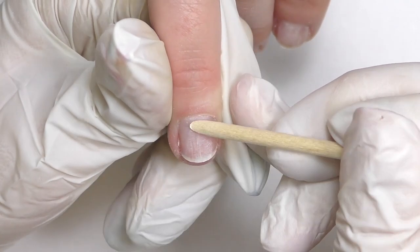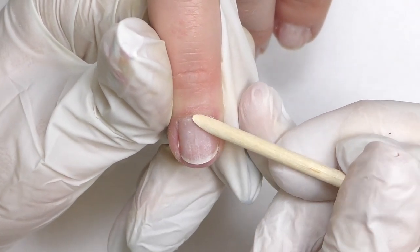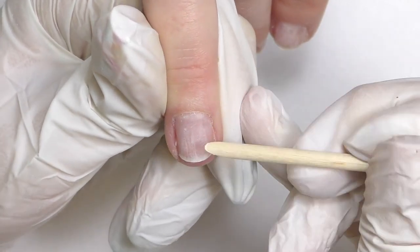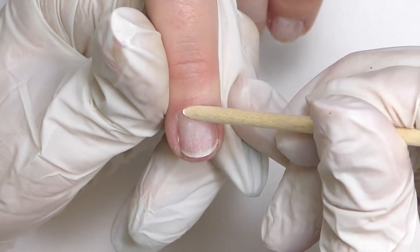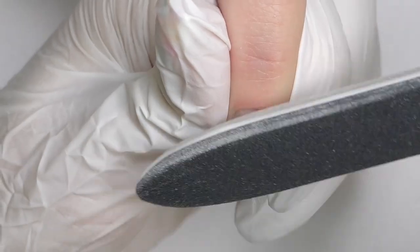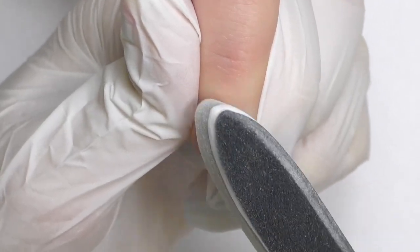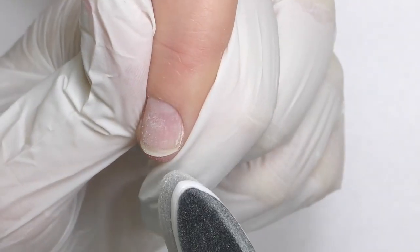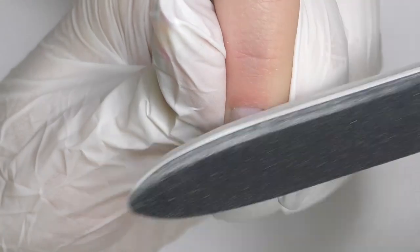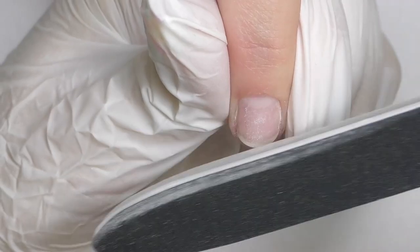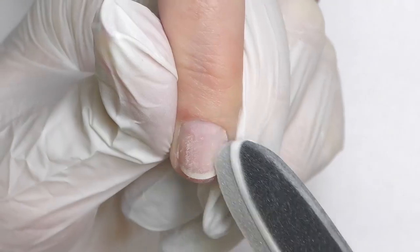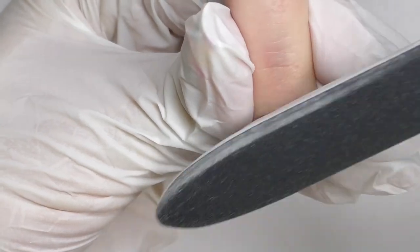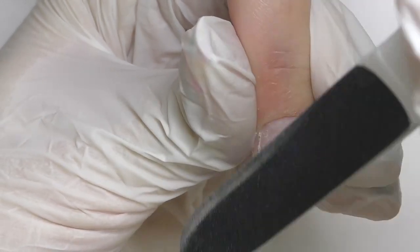After that, you can do the cuticle care procedure. You can do it with cuticle remover or you can do electric file manicure. This is up to you. And after that we need to remove the surface shine. But since the nails are already damaged, we need to be super gentle and careful. I will use a buffer which is 220 grit and file only in the direction of the free edge. Also, try not to file a lot on the same spot.